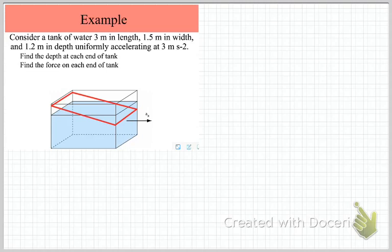In this example we've got a tank of water that's rectangular, and the tank begins to accelerate at 3 meters per second squared to the right. The problem is to find the depth at each end of the tank and the resultant hydrostatic force acting on each end of the tank.